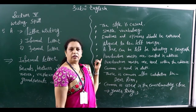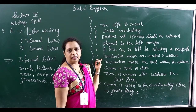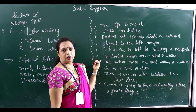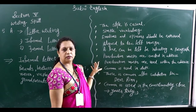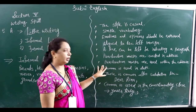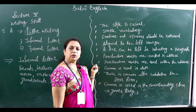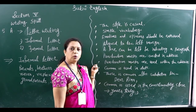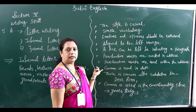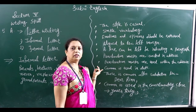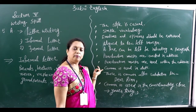In letter writing we used to use many punctuation marks, but now in the new letter pattern, punctuation marks are omitted at the end of each address line. Within the address, punctuation marks are used, but at the ending of each address line they are omitted. Also, an important point: a comma is used in the date — for example, 25th January, 2020 — with a comma between the month and the year.